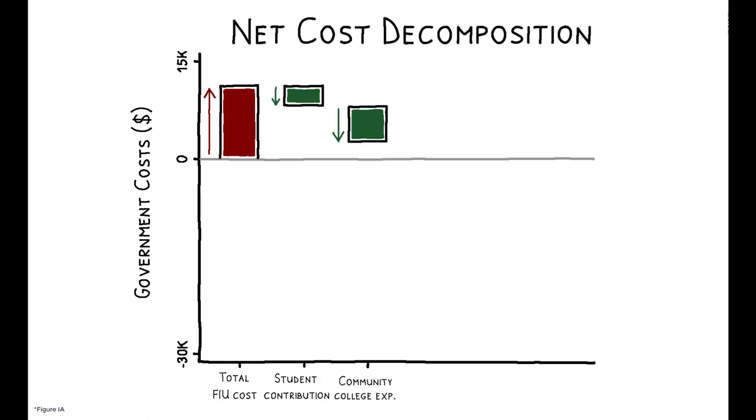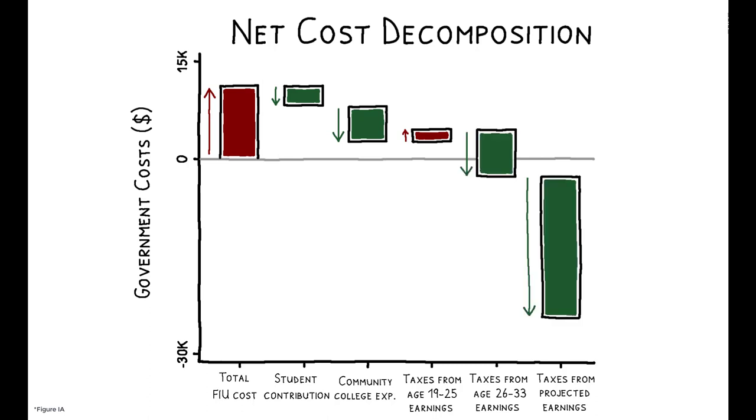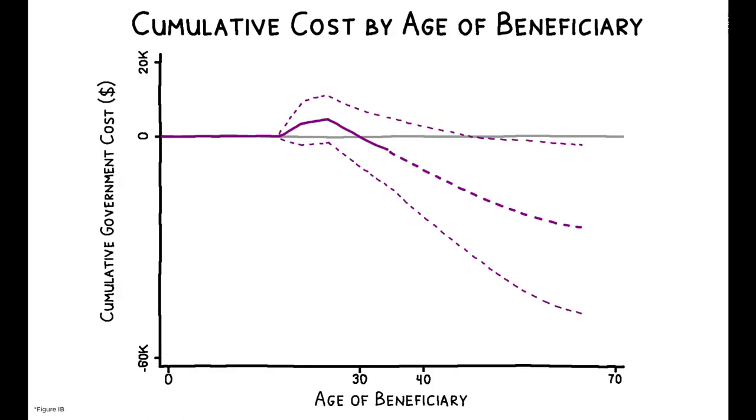Next, the impact on earnings means that tax revenue is lower and therefore the net cost of the policy is higher during the first seven years after admission, but higher earnings thereafter lead to higher tax revenues and lower costs. In fact, the authors estimate that the increase in tax revenue from year 8 onwards is substantial enough to push the cumulative net cost negative by year 14.